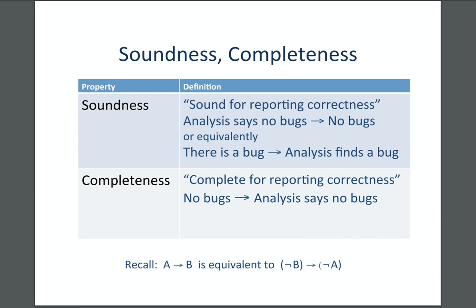If you extend type checking to other kinds of program defects — like null pointer errors or buffer overflows — you can use similar reasoning to prove the absence of bugs. The problem is if we are trying to prove the absence of bugs and use that to say there are bugs. With soundness: if my sound analyzer says there are no bugs, it's true the program has no bugs. But what happens when the analysis says it can't prove there are no bugs?